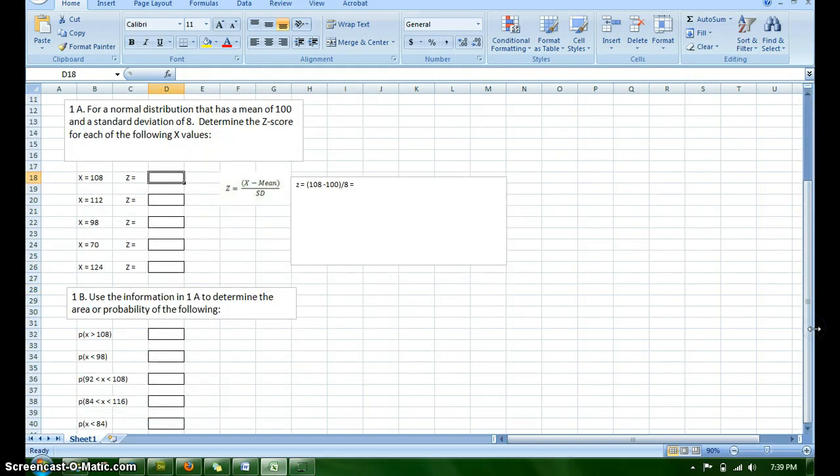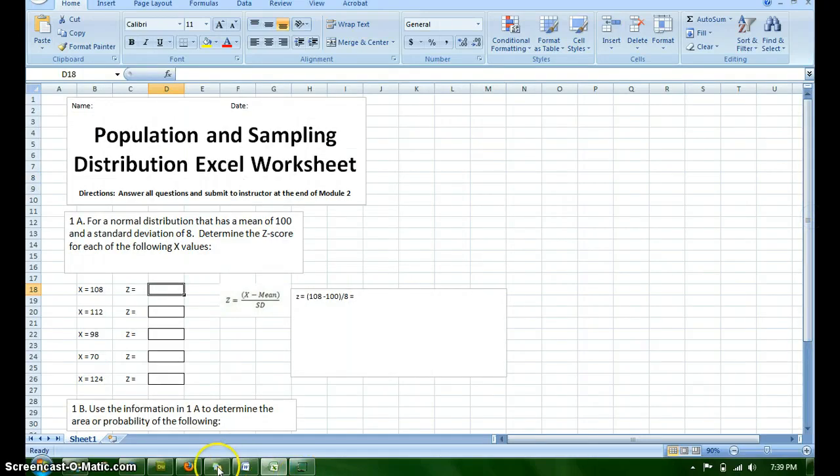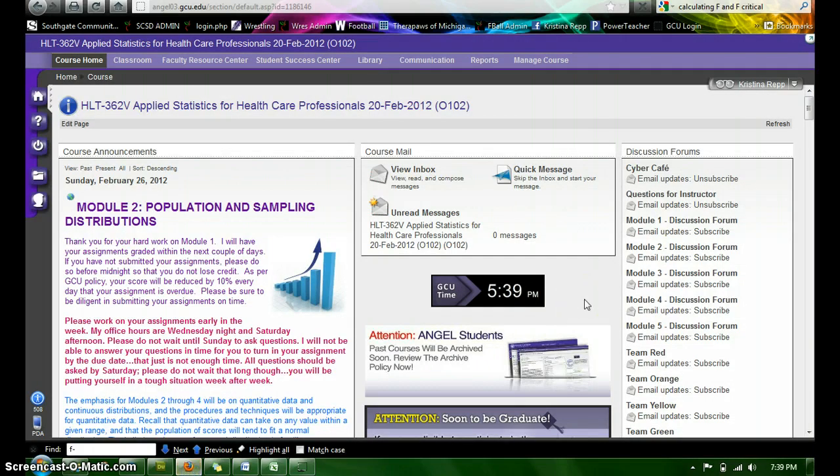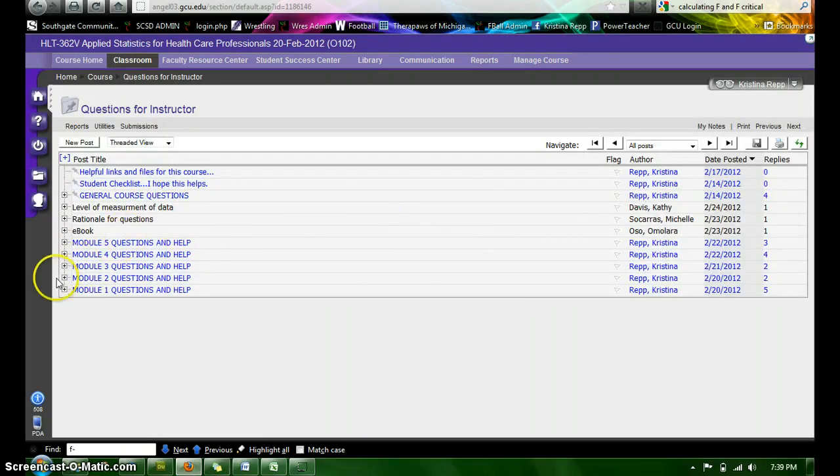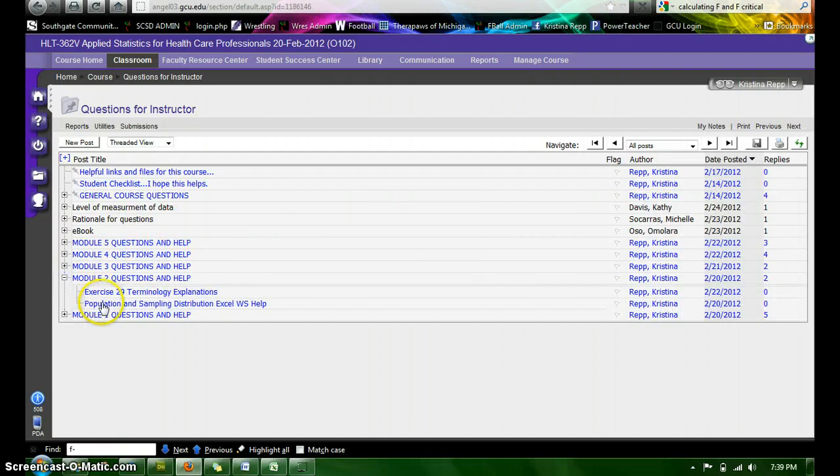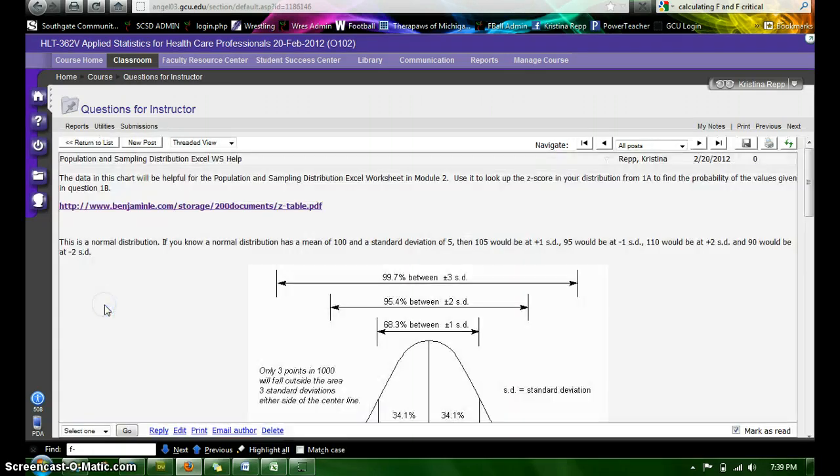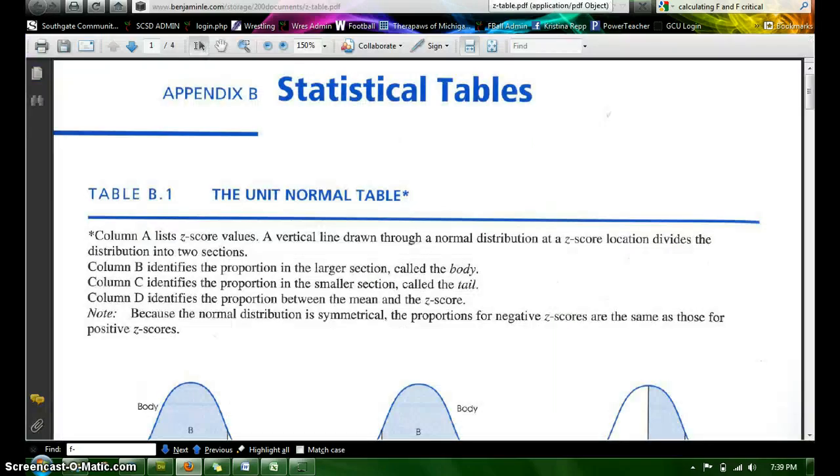The second part for the probability, there is not a whole lot of work you need to show me, but I am going to walk you through what to do on those. Okay, so I am going to go back to the course. When I click in the course, I am going to click on Questions for Instructor, Module 2, and I posted this example here, Population and Sampling Distribution. The first thing that you want to do is click this link at the top because that brings up our Z-table. I am going to show you how to use that.